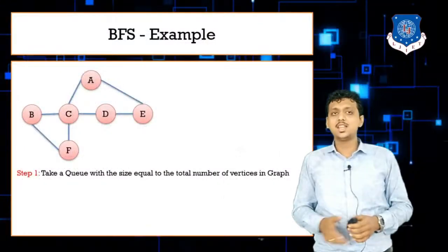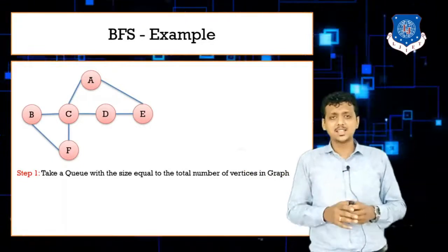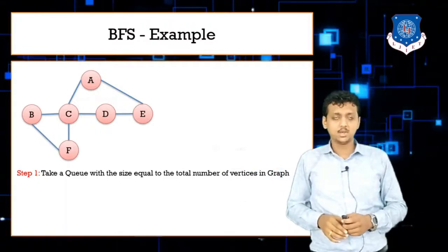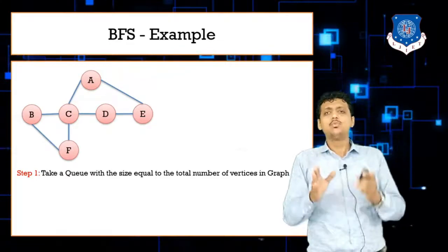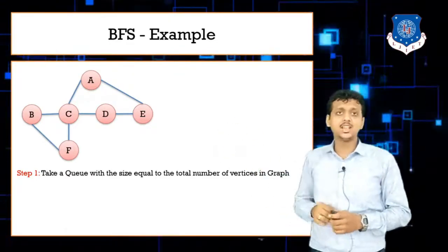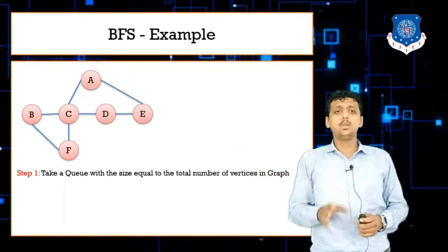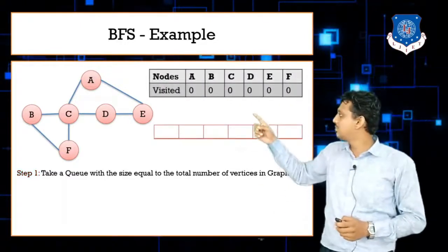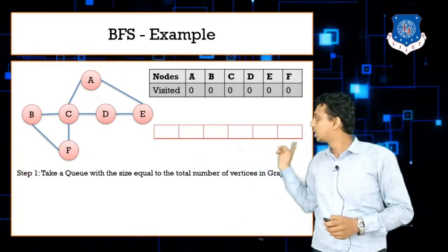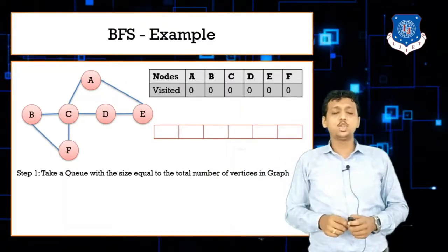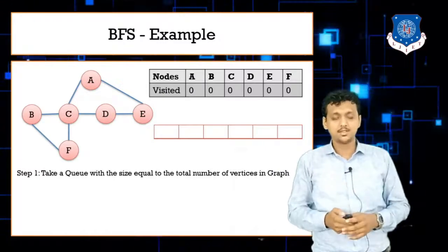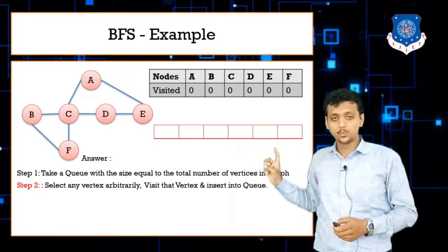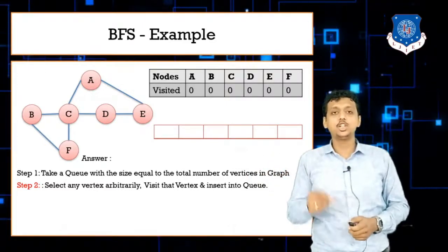Now let's look at the example — the same graph as the DFS example. It has nodes A, B, C, D, E, and F. Since there are six nodes, we create a queue of size six. We also maintain a visited array, just like in the DFS algorithm, to track which nodes have been visited.